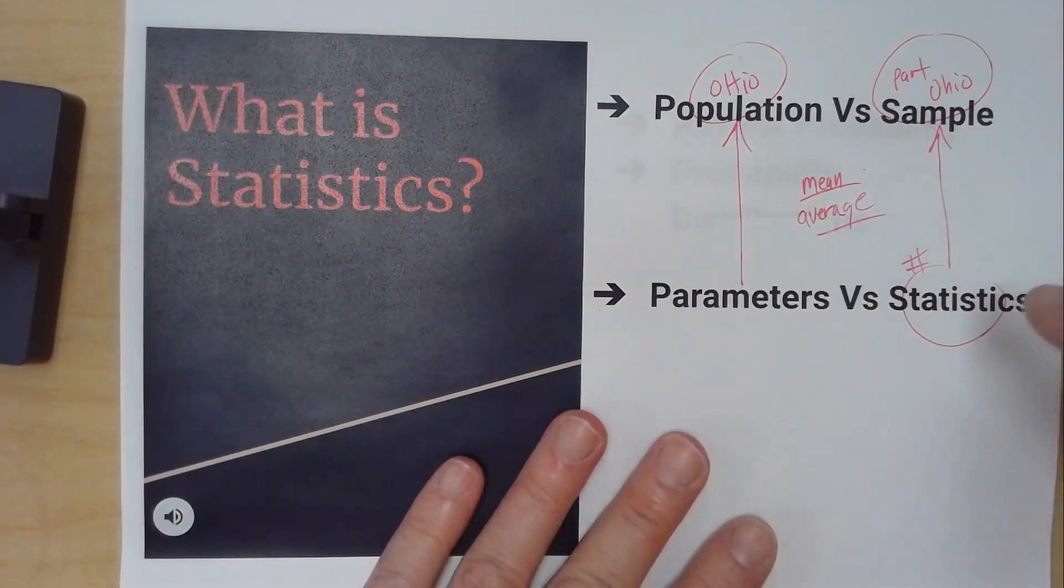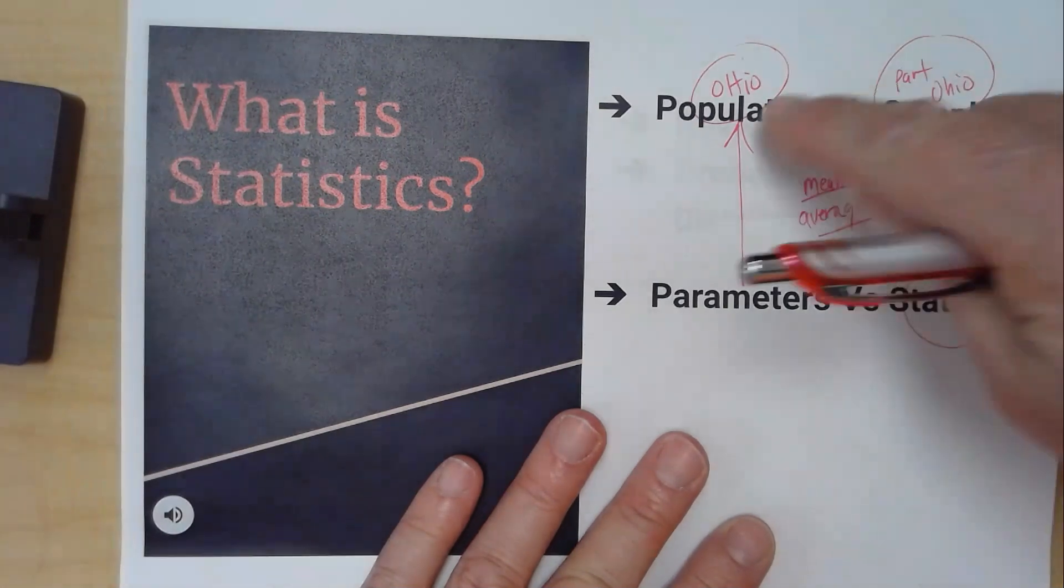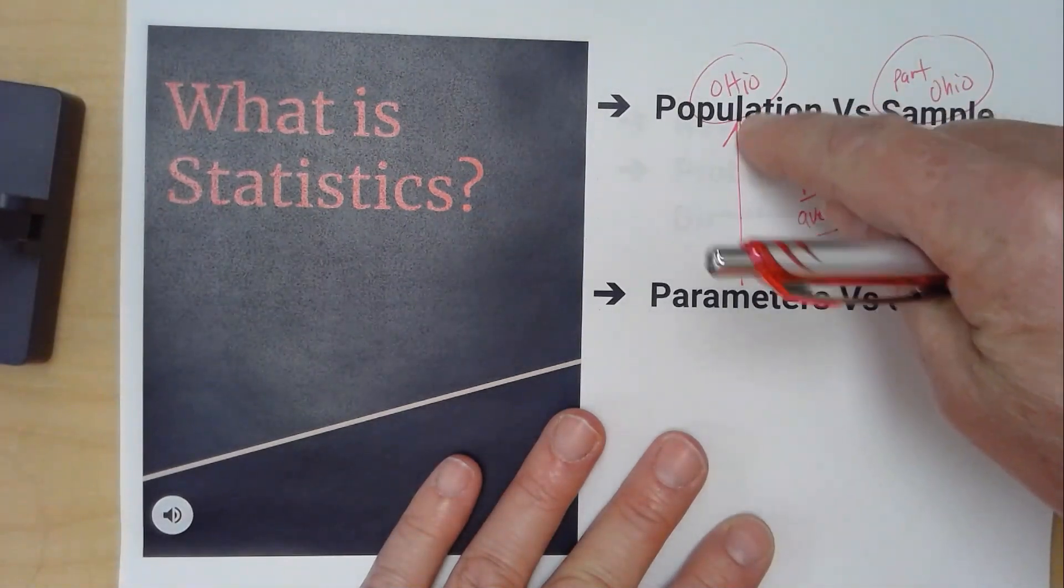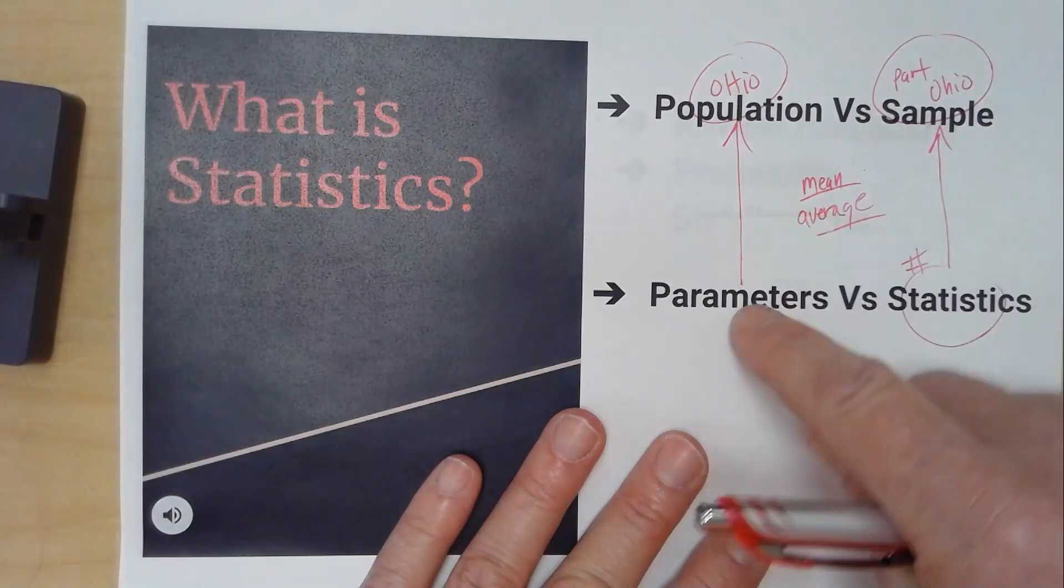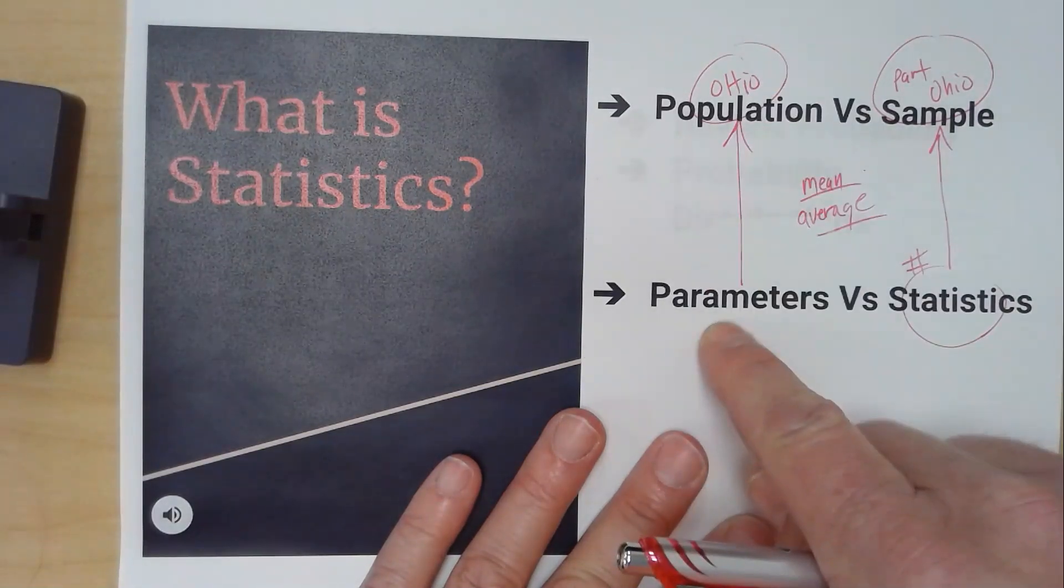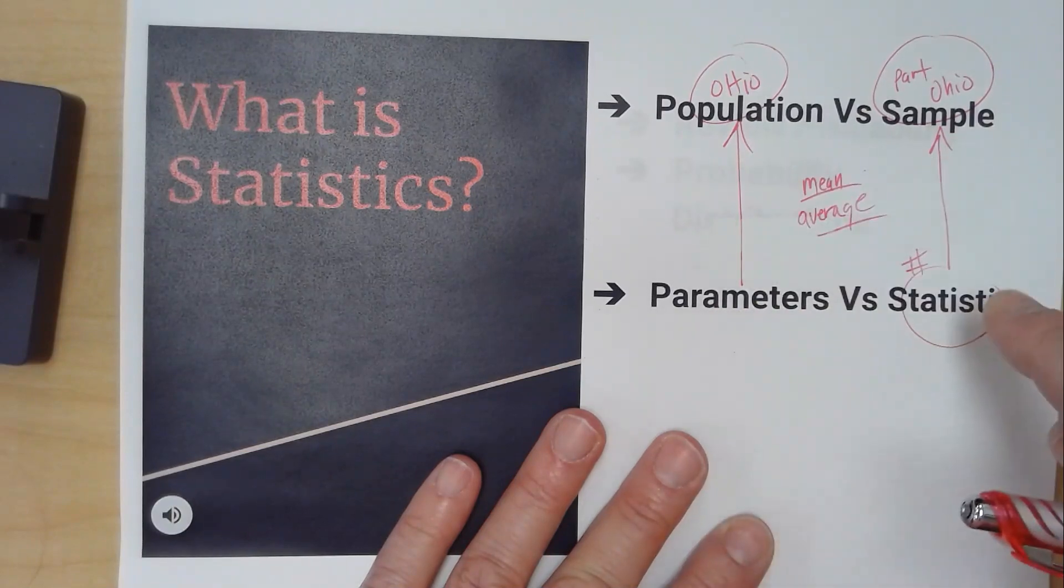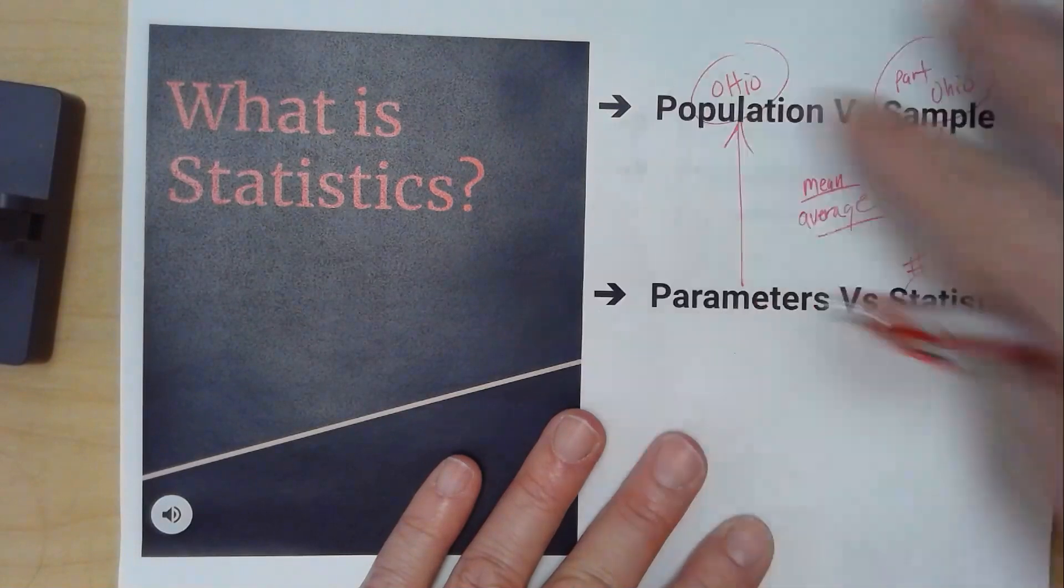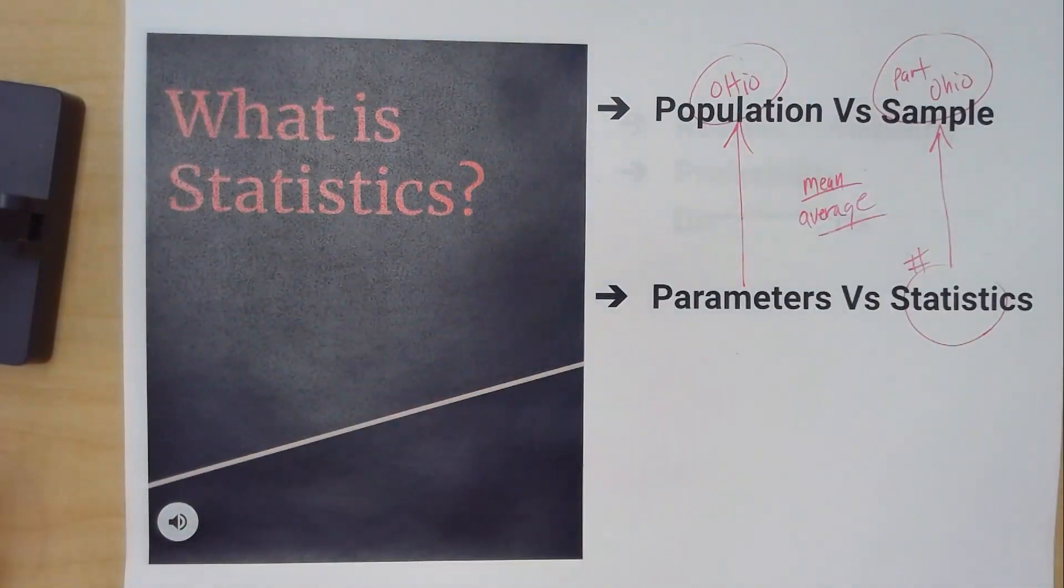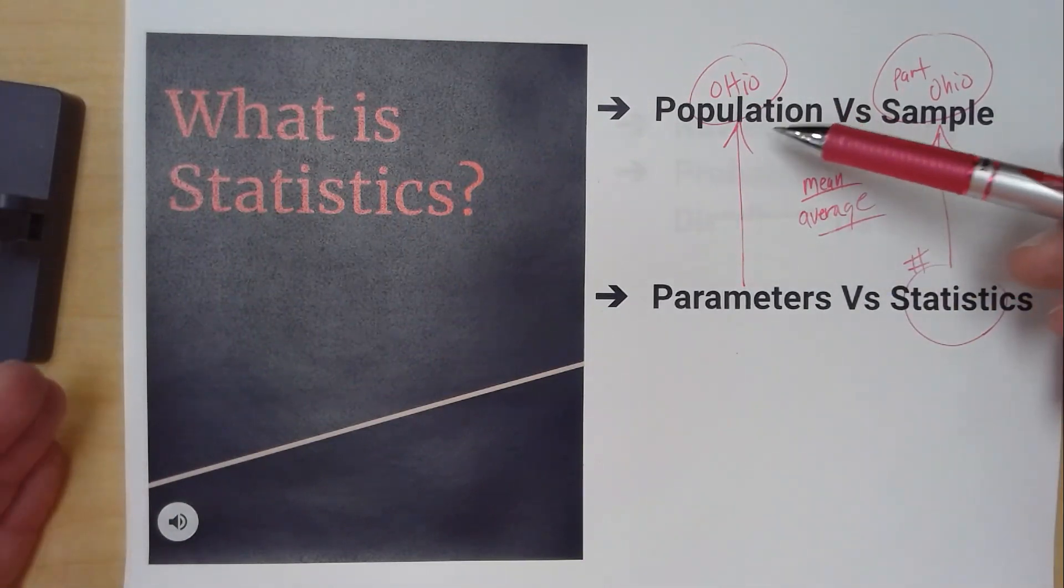Statistics are numbers associated with a sample. A sample is just part of the bigger thing. Parameters are the numbers. So you can have a mean for the population, that would be a parameter. You can have a sample mean, that would be a statistic. We can't go out and talk to everybody, so we have these statistics.